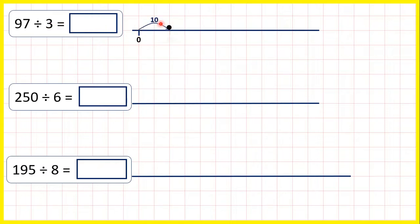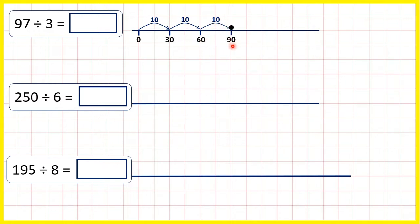So 10 times 3 is 30. If we add another 30, so another 10 lots of 3, that takes us to 60. And then another 10 lots of 3, so another 30 takes us to 90. Now 90 is close to 97, so now we're not going to count another 10 steps of 3, because that would take us over 97.